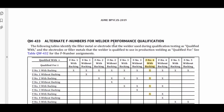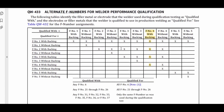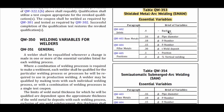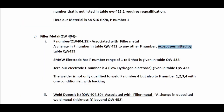To obtain details regarding the F number range, we refer to table QW433 — alternate F numbers for welder performance qualification. The welder is qualified with F number 4 with backing, which means he is qualified for F number 1 with backing, F number 2 with backing, F number 3 with backing, and F number 4 with backing. Since his qualification was conducted with backing, he is not qualified to weld without backing, as deletion of backing is an essential variable per the code.